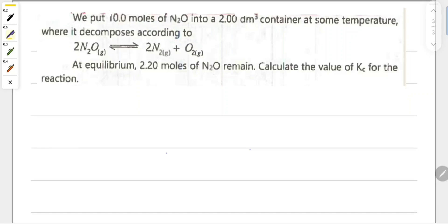We are given that 2N2O produces 2 moles of nitrogen gas and 1 mole of oxygen gas. Now we have to write the initial concentration.